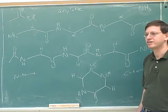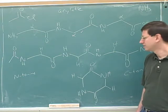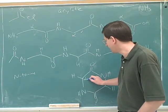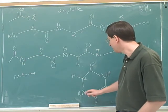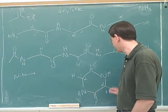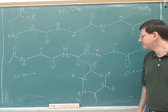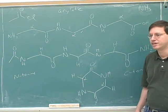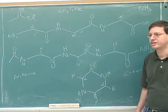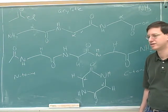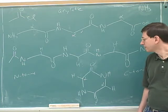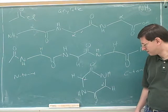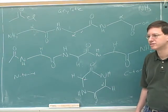This is a cyclic dipeptide. It still is a peptide because we still have the structure: nitrogen, alpha carbon, carboxy carbon. Nitrogen, alpha carbon, carboxy carbon. But instead of having an N-terminus or a C-terminus, we've made it cyclic. So, here we have a cyclic dipeptide. It's a dipeptide because it's made out of two amino acids, right?